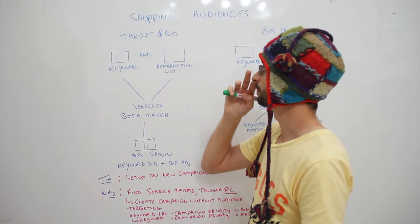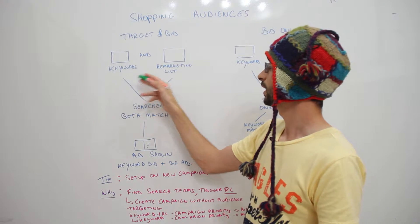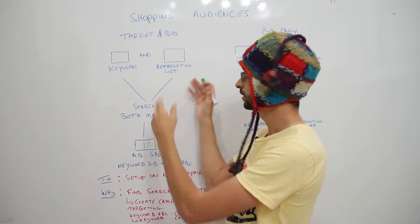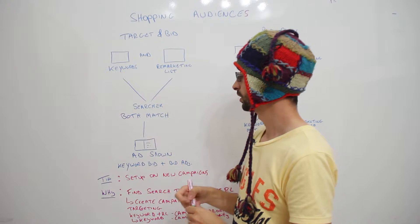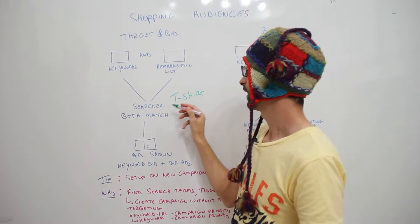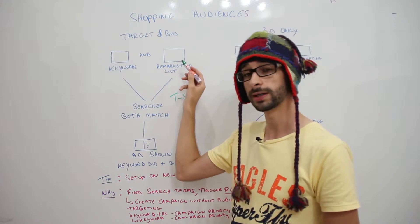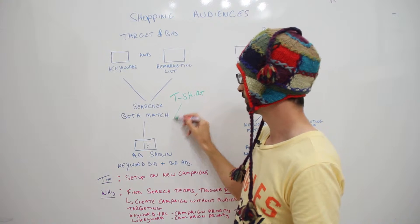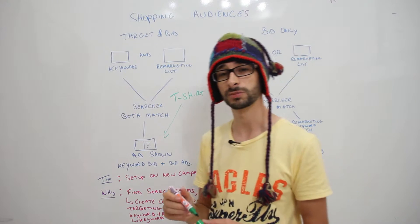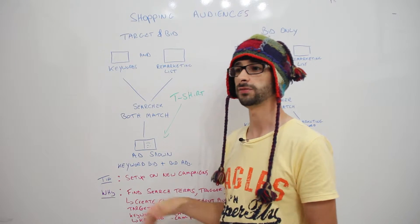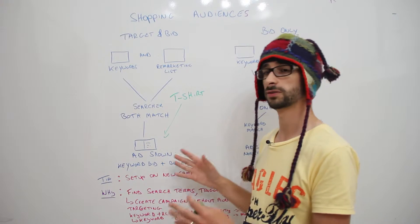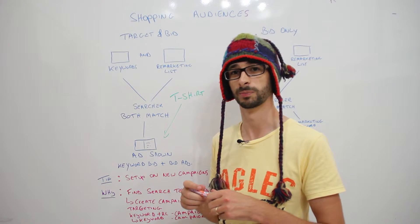So when you use target and bid, you've got your keywords and your remarketing list that both need to be matched to a search. For example, if I'm searching for t-shirt and that is one of my keywords and the customer has already been to your website, then this will trigger an ad. Both the keyword bid and the bid adjustment will be added. So for example, if you have 50 cents on your normal keyword and your bid adjustment is plus 20%, then it will add 20% to your normal bid.